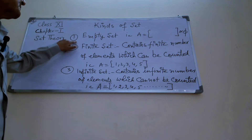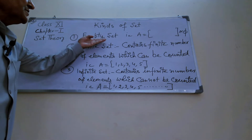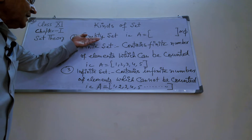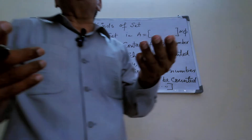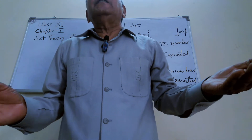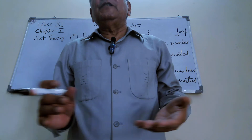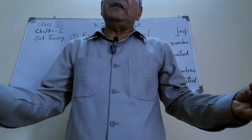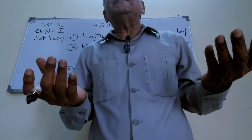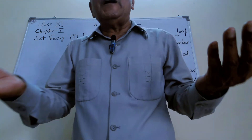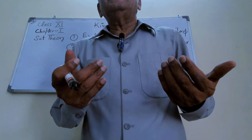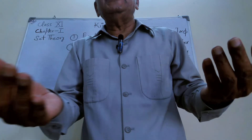First kind: empty set. You can understand by the word 'empty.' Empty means there is no element in the set — there is nothing in the set. So a set which has no element is called an empty set. A glass without water is empty, a room without students is empty, so a set without elements is also empty.